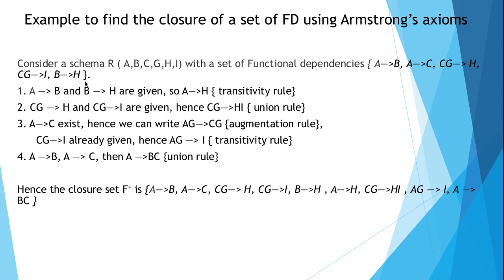The closure of functional dependency means the already defined dependencies along with the set of dependencies we can derive from them. In the first step, a to b and b to h are already given. Applying the transitivity rule, we can write a dependency from a to h. That is a derived functional dependency. In the second step, cg to h and cg to i are already given, so applying the union rule we can define cg to hi.